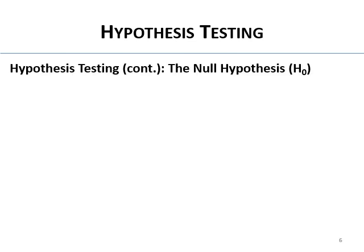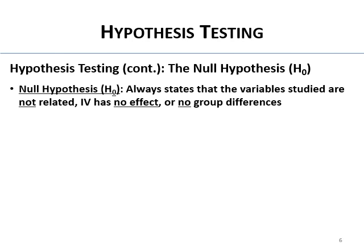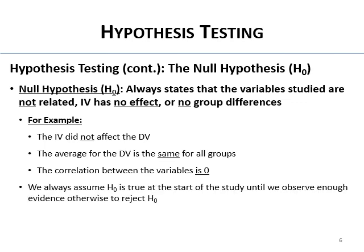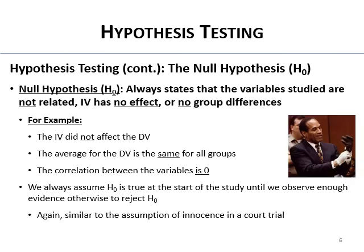The null hypothesis always states that the variables being studied are not related, or that the IV has no effect, or that there's no difference between groups. For example: 'The IV did not affect the DV,' 'The average for the DV is the same for all groups,' or 'The correlation between the variables is zero.' We always assume the null is true at the start of the study unless we observe enough evidence to reject it — similar to the assumption of innocence at trial.